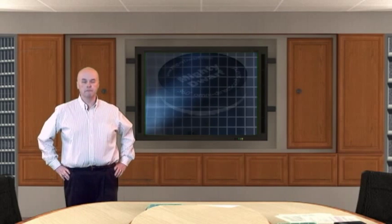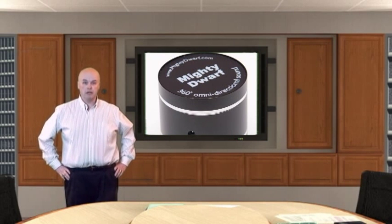What we need to go through first is an explanation of the different parts of the Mighty Dwarf speaker. The Mighty Dwarf consists of essentially three different pieces: the speaker, the power cord, and the amp. I'll run through each of these different pieces for you.